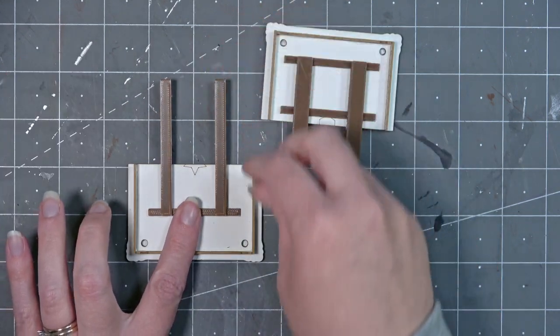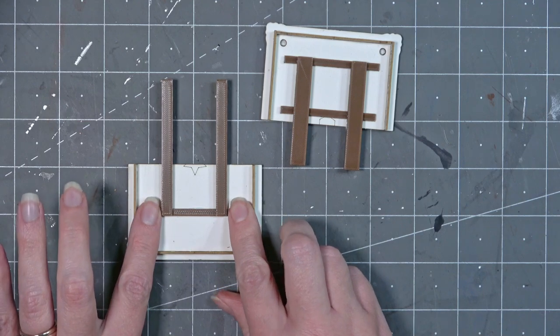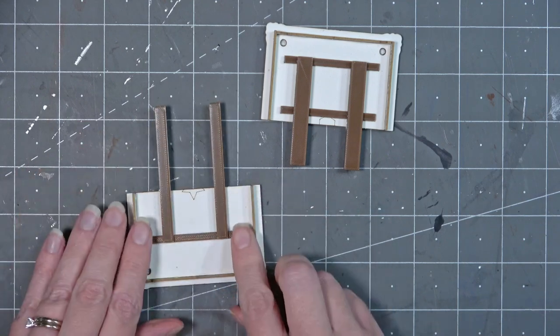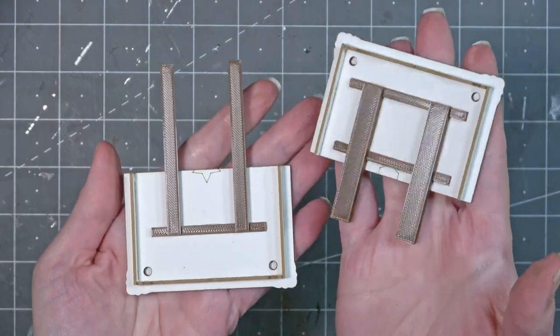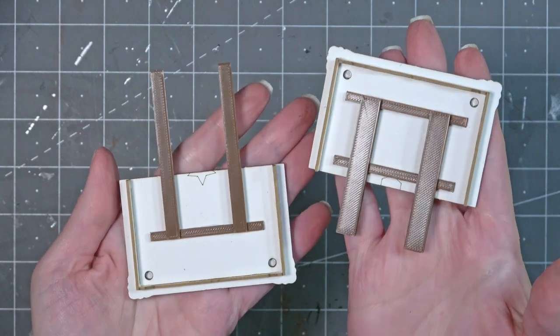I suggest that you allow these slides to dry for an hour before you do anything else on the table. This will allow enough time for the tacky glue to connect the pieces together and not have any chance of them moving.